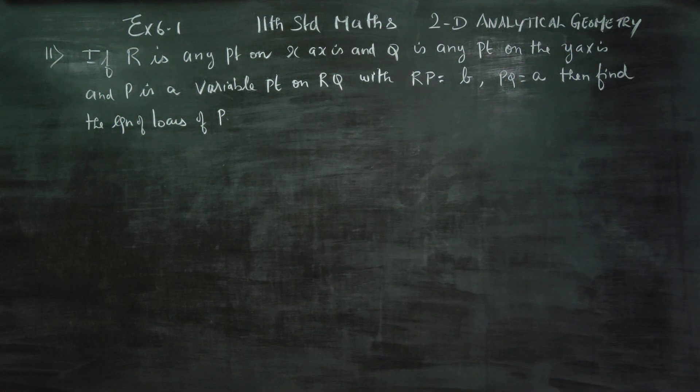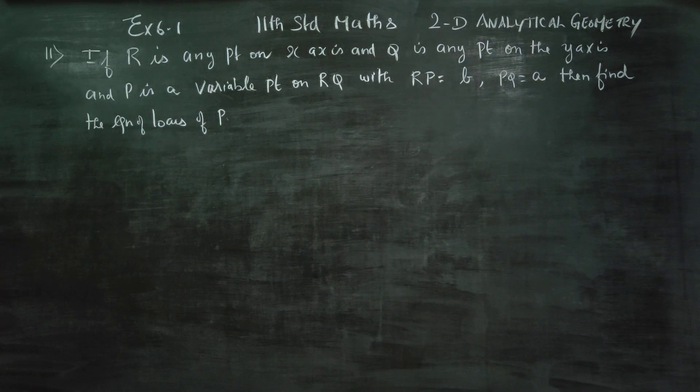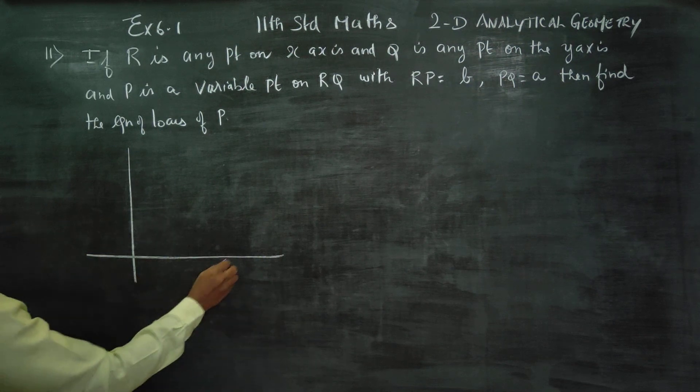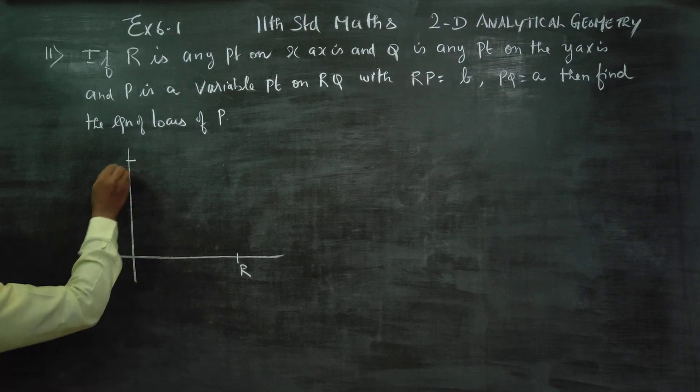Dear 11th standard students, in exercise 6.1, problem number 11: If R is any point on the x-axis and Q is any point on the y-axis, then R is a point on the x-axis and Q is a point on the y-axis.